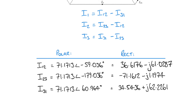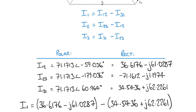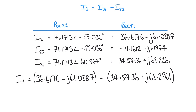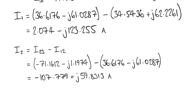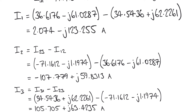Now the subtractions can be performed quite easily. Returning to those three equations for the line currents, I1 is given by doing those subtractions as defined, giving a result of 2.074 − j123.255 amps. We do similar for I2 and I3 — just subtracting those phase currents from one another. All we do is subtract the real numbers to get the real term and subtract the imaginary numbers to get the imaginary result.